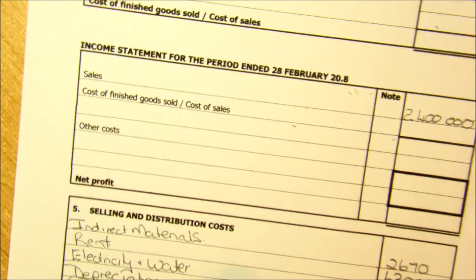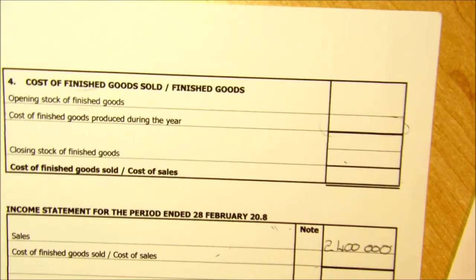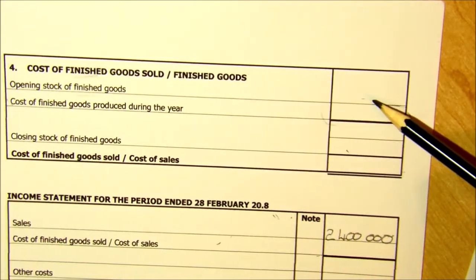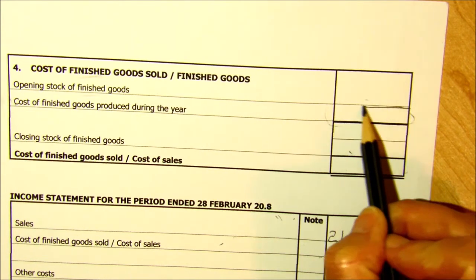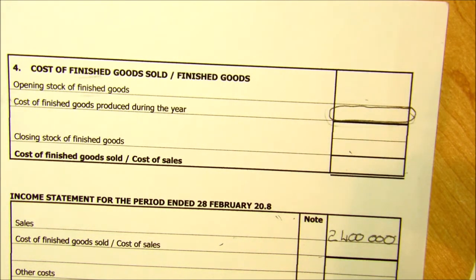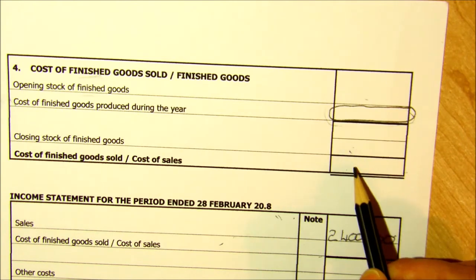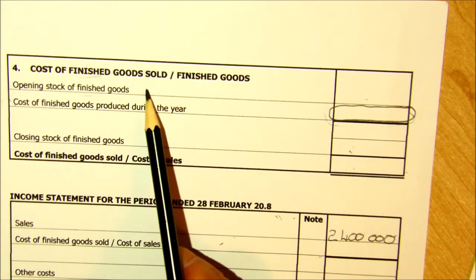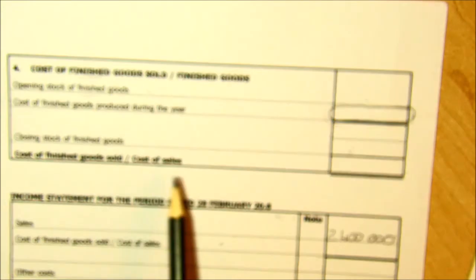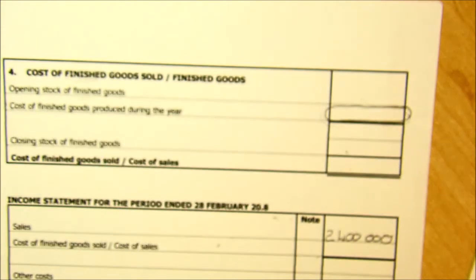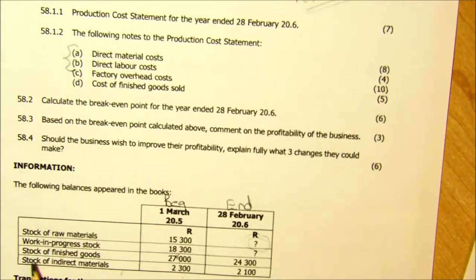The finished goods account is very much like the trading stock account you've always dealt with. In other words, if we've got an opening stock of finished goods — an opening balance of goods already in finished goods, like trading stock — we add on the value of goods that have come from the factory. Remember, we're not buying the goods this time, we're producing them. Then there's our closing stock, and that gives us the cost of goods that have left, which is our cost of sales.